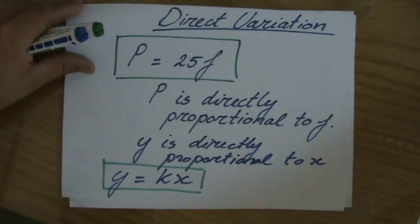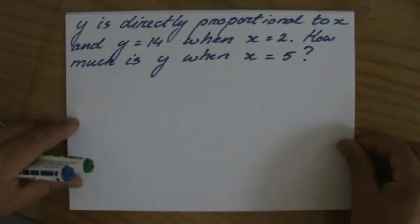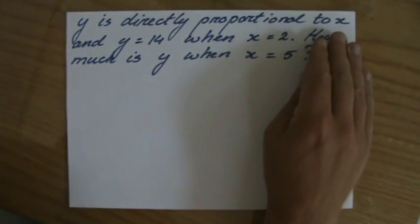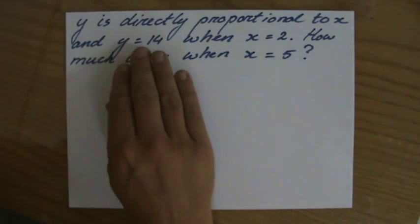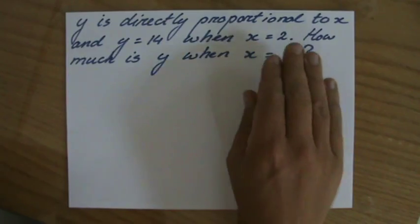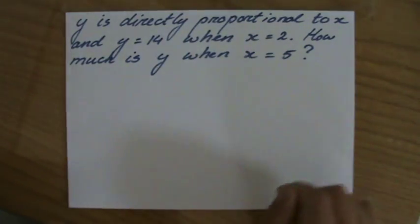The question says: y is directly proportional to x, and y equals 14 when x equals 2. How much is y when x is 5? This is a typical direct variation question.